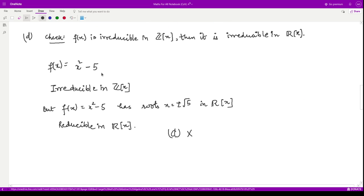So here we can consider this polynomial f(x) = x² - 5. Now this polynomial is irreducible in Z[x], because it does not have any root in Z, any root which belongs to integers.